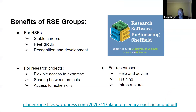Some of the benefits of RSE groups — drawing from a talk by Paul Richmond, RSE group leader at Sheffield: for the RSEs themselves, they have stable careers, a peer group, and recognition and development. For research projects, there is flexible access to expertise as and when needed, sharing between projects, so a PI doesn't have to hire an RSE for however long — they can tap into the expertise as needed. There's also access to niche skills, rather than relying on one person who has to do everything. For individual researchers, there's a source of help and advice, training, and infrastructure — for example, an institutional GitHub repository might be run by the RSE group.